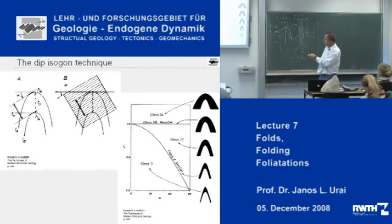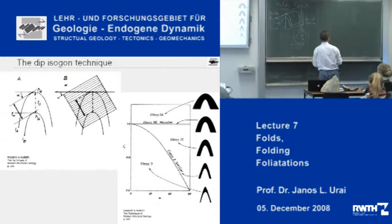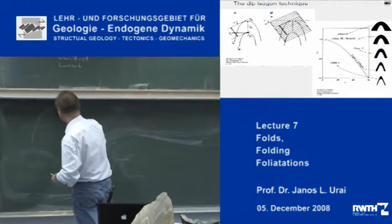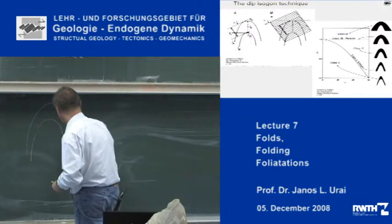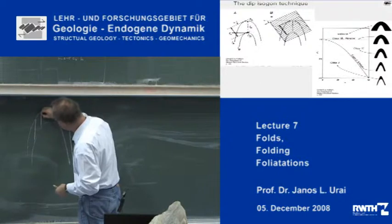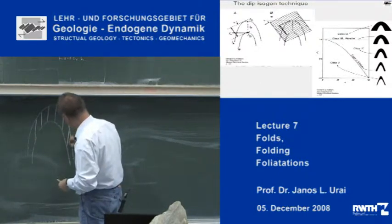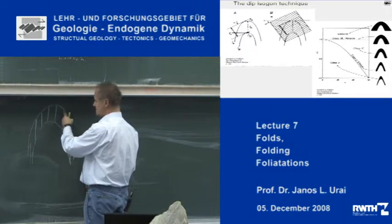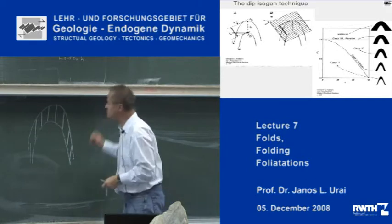This is the class two fold — a similar fold. In this particular example, I can make a little sketch for you. The fold looks like this. And now this distance is the same. You can measure it in this direction and it's always the same. This is the class two, a similar fold.